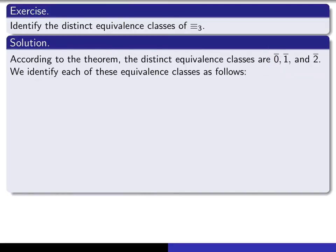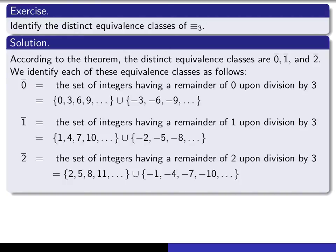Each of these is a set of integers. 0-bar is the set of all integers congruent to 0 modulo 3 — that is, integers having a remainder of 0 upon division by 3, which are precisely the integers divisible by 3. 1-bar is the set of integers having a remainder of 1 upon division by 3. And 2-bar is the set of all integers having a remainder of 2 upon division by 3.